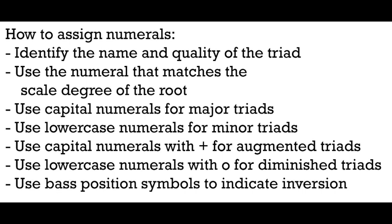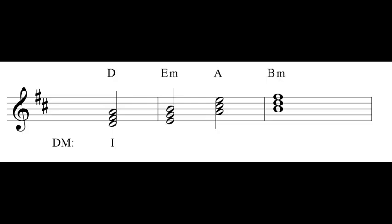If you want to take notes, go ahead and pause it. Now let's put this into action. Roman numerals always work within the context of a key. I've got two sharps here, so I'm using the D major scale. To assign a Roman numeral for this D major triad, I ask: what is the scale degree of the root? The root is D, and in the D major scale, D is scale degree 1. So I use Roman numeral 1. Because it's a major triad, I write a capital I. Because it's in root position, the bass position symbol is nothing at all — just a capital Roman numeral I — indicating this is the tonic triad.